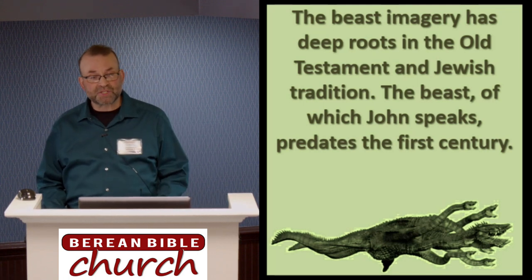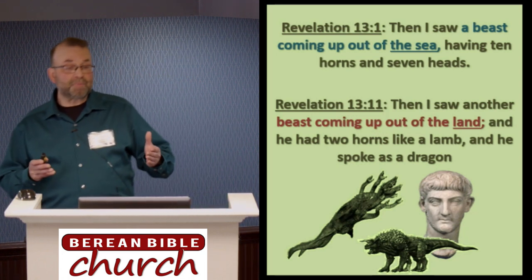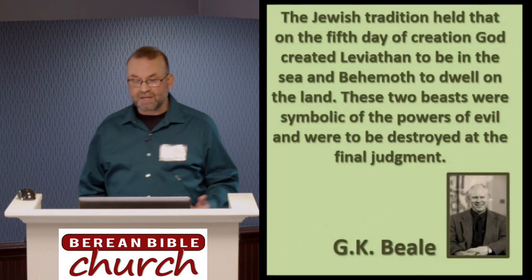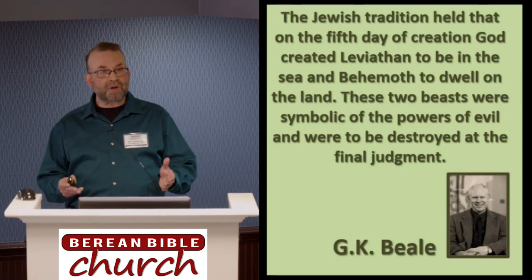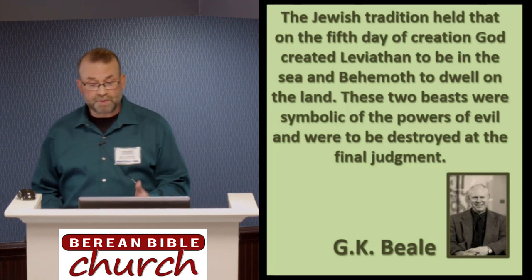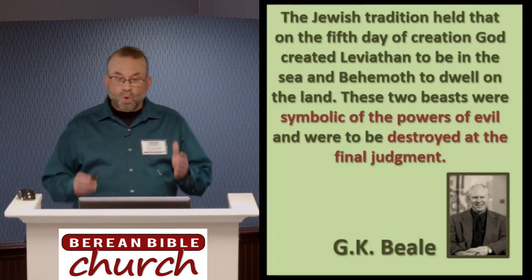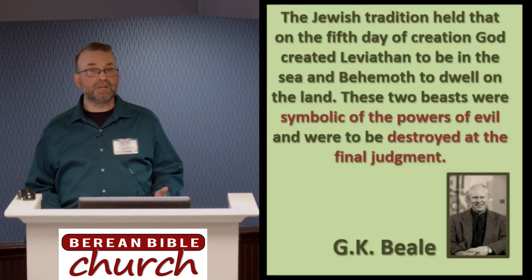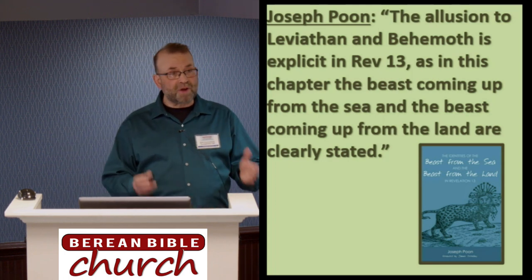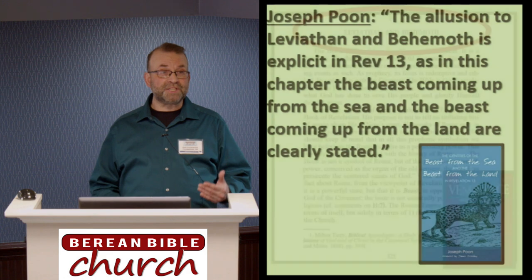When John spoke of one beast rising from the sea and another beast coming from the land, his original audience would have recognized the imagery immediately. As G.K. Beale says, Jewish tradition held that on the fifth day of creation, God created Leviathan to be in the sea and Behemoth to dwell on the land. These two beasts were symbolic of the powers of evil and were to be destroyed at the final judgment. With regard to John's usage of this imagery in Revelation, Joseph Poon writes: the allusion to Leviathan and Behemoth is explicit in Revelation 13 — the beast coming from the sea and the beast coming from the land are clearly stated. Thus, David Chilton's chapter on Revelation 13 is aptly titled 'Leviathan and Behemoth.' Chilton knew that John was applying a familiar historical motif to a current contemporary situation.